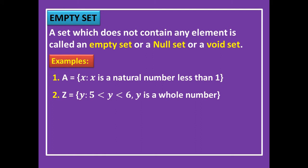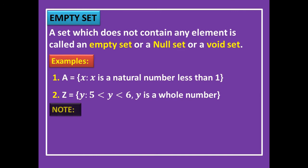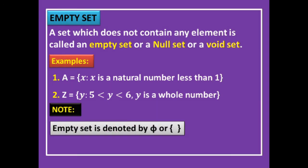Another example: Z = {y : 5 < y < 6, where y is a whole number}. Whole numbers are 0, 1, 2, 3, 4, 5, 6, and so on. Between 5 and 6 there is no whole number. So set Z also has no element — we call it an empty set. Note that the empty set is denoted by empty flower brackets or by the symbol phi (φ).